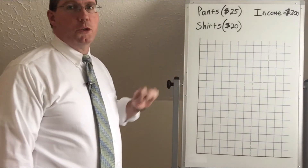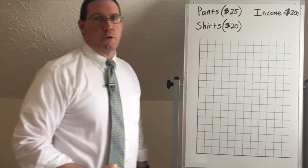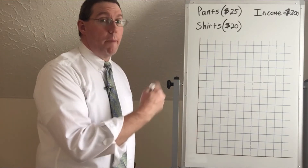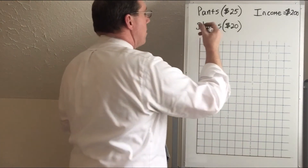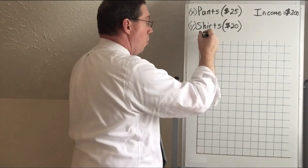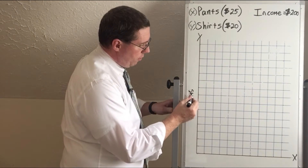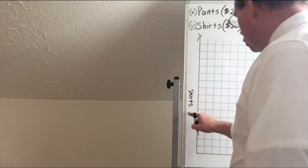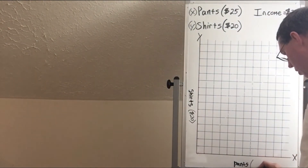Here we've got a coordinate plane. You have to be given the price of each product and the income of the household. We're going to call pants good X on the horizontal axis and shirts good Y on the vertical axis. Shirts are $20 each and pants are $25 each. Each line represents one unit, so we have one pair of pants, two pairs, three pairs, and so on.